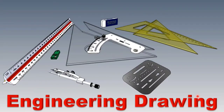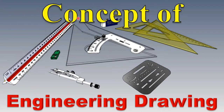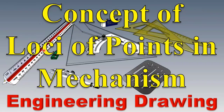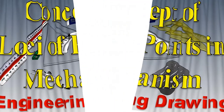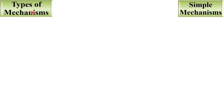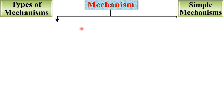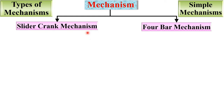Welcome to my engineering drawing playlist. Today I will be explaining the concept of locus of points in mechanisms. There are two types of mechanisms for locus of points: the first one is the slider crank mechanism and the second one is the four bar mechanism.